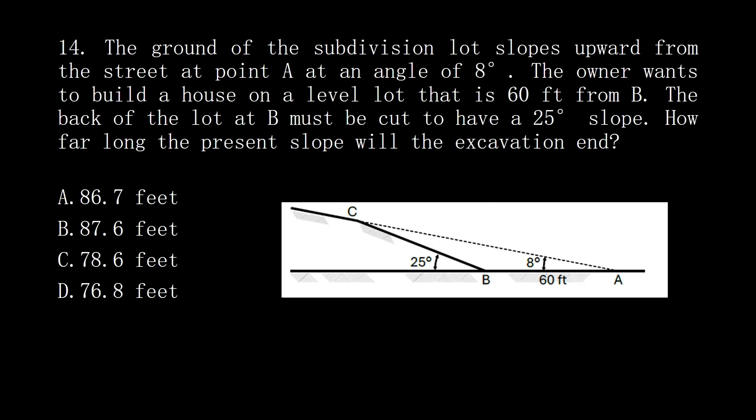Question 14: The ground of the subdivision lot slopes upward from the street at point A at an angle of 8° as shown. The owner wants to build a house on a level lot that is 60 ft from B. The back of the lot at B must be cut to have a 25° slope. How far along the present slope will the excavation end?